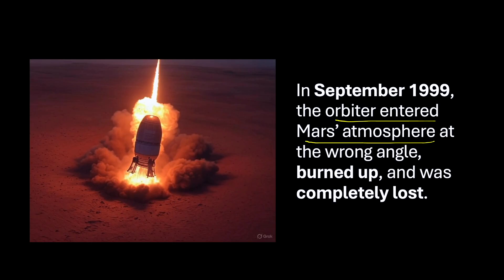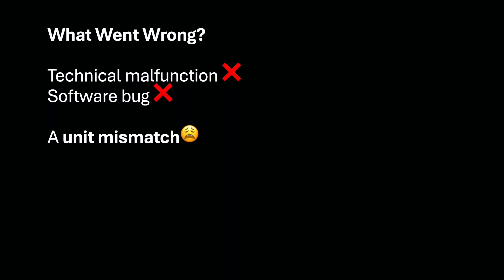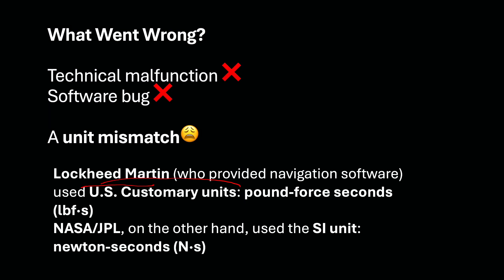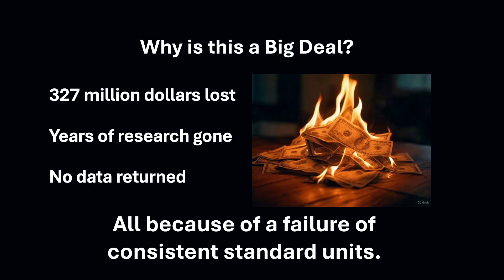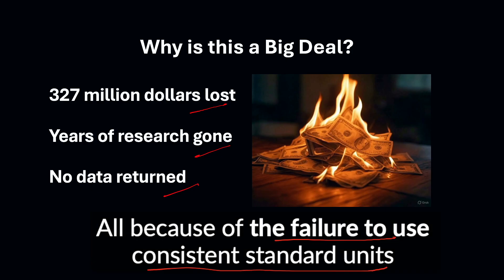What do you think went wrong? It was not a technical failure or a software bug — it was a unit mismatch. What happened was, Lockheed Martin used one type of a measuring system, whereas NASA JPL used the SI unit system. All we need to understand is there was a unit mismatch that led to the loss of millions of dollars. Years of research got wasted — sheer wastage of time, money and resources because of a silly error, that is a failure of consistent standard units.